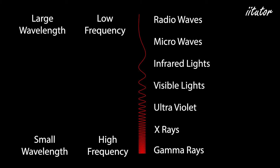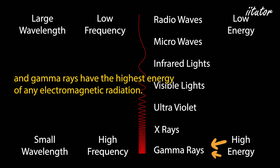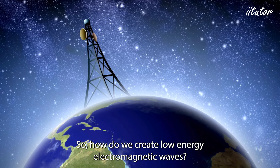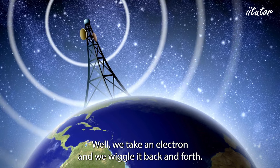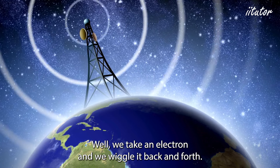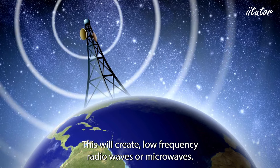EM waves with shorter wavelengths will have more energy. Radio waves have the lowest energy of any electromagnetic radiation and gamma rays have the highest. To create low-energy electromagnetic waves, we take an electron and wiggle it back and forth, which creates low-frequency radio waves or microwaves.